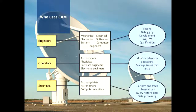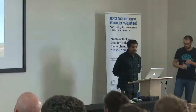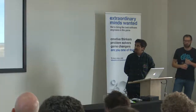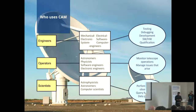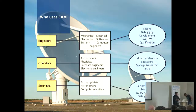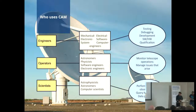Who uses CAM? Three categories: engineers — mechanical, electrical, electronic, software, system, and computer engineers — who do testing, debugging, development, and qualification. Operators — usually astronomers, physicists, software and electronic engineers — who monitor the telescope, manage issues, and run observation scripts for scientists. Scientists — astrophysicists, astronomers, and computer scientists — who perform observations, create historical data, and do data processing. These aren't all use cases, but give context for how Python is used.